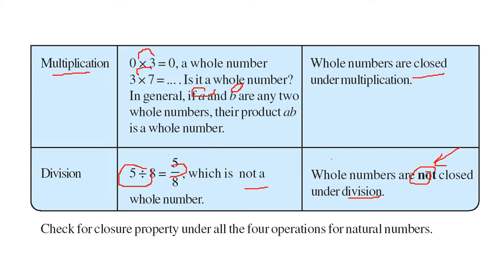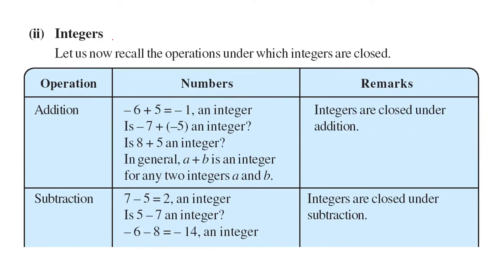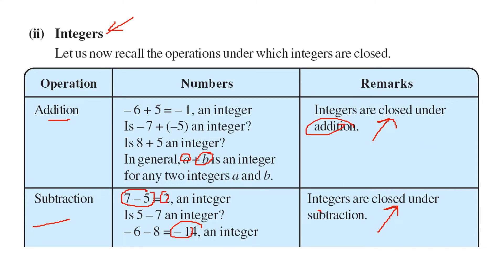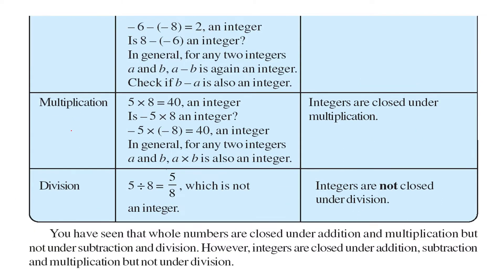The closure property is different for different operations. When we talk about the properties on integers — when we add two integers, that is if it is a and b, if we add two integers you always get an integer. When we subtract two numbers, again we'll get a number which is an integer. So the integer is closed under addition and subtraction.